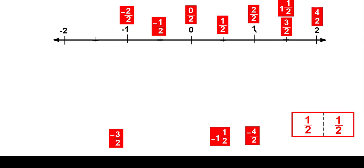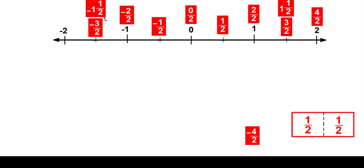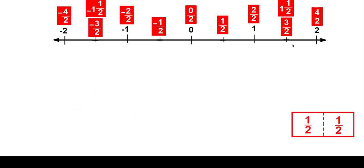And doesn't that look right? If this is one, wouldn't this be one and one half? Three halves would be that. And then four halves — isn't that the same as saying two? Because if you did four divided by two, wouldn't that be two? So if you have three halves here, the opposite would be negative three halves, or negative one and one half. And then if you have two over here, the opposite would be negative four halves.